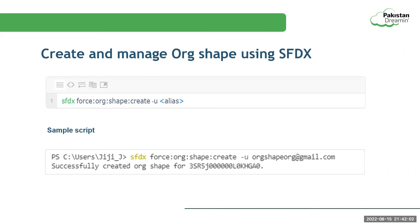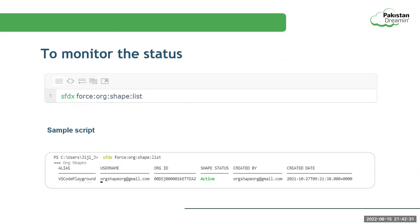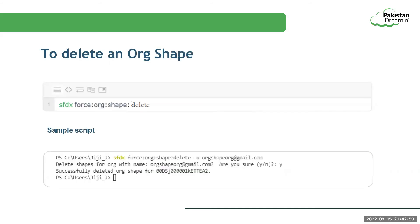Once the org shape is created successfully, it will show a success message. This command is executed asynchronously. To monitor the status, we run: sfdx force:org:shape:list. This gives a sample response where we can see the status of the org shape creation along with other details. Once the status changes to Active, we can use this org shape for scratch org creation. To delete the org shape of an org, we run: sfdx force:org:shape:delete. It will ask for a confirmation message; once we confirm, the org shape will be deleted and a success message is shown.